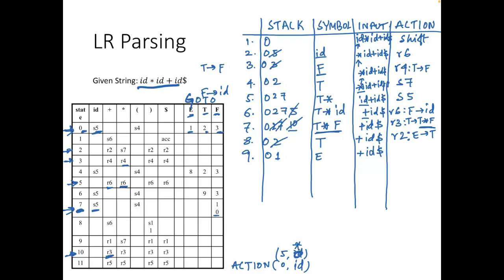Top of stack is 1 and current input is +. action[1, +] is shift 6. We push 6 onto the stack and move + to the symbol part. What remains in input is id $. Top of stack is now 6, current input is id. action[6, id] gives s5, so we push 5 onto the stack. Symbols are E + id.